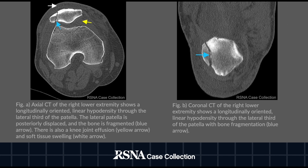The image on the left is an axial CT of the right lower extremity demonstrating similar findings to those seen on the prior radiographs. A linear hypodensity can be seen through the lateral third of the patella. Bone fragmentation is appreciated at the posterior aspect of this linear hypodensity, indicated by the blue arrow. Pre-patellar soft tissue swelling is indicated by the white arrow and a knee joint effusion is indicated by the yellow arrow. There is no osteochondral fragment or loose body, and the knee joint is intact without dislocation.